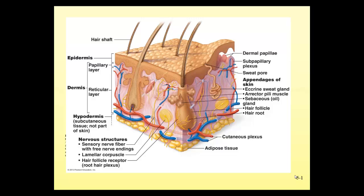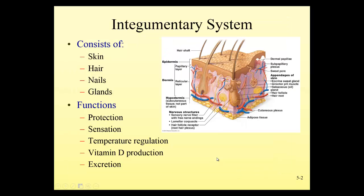This video lecture will talk about the structure and function of the integumentary system, otherwise known as our skin. When we look at our skin, we see that it's made up of several layers and also a variety of different structures that help the skin maintain homeostasis. Parts of the integumentary system include the two layers of the skin, the hair, the nails, and a variety of glands found within some of the skin layers.